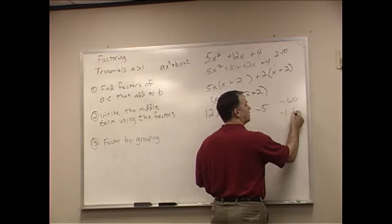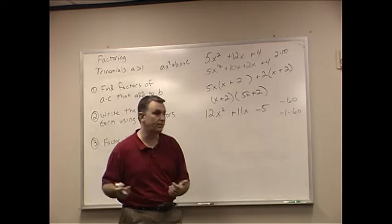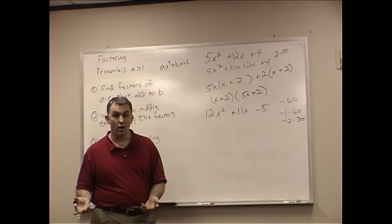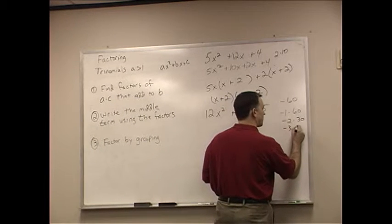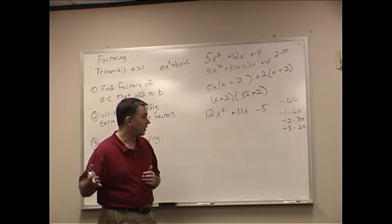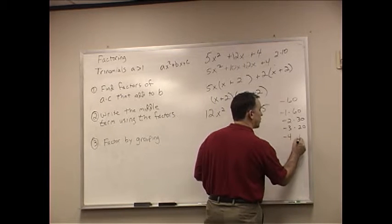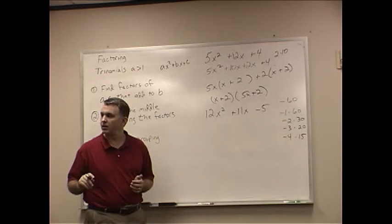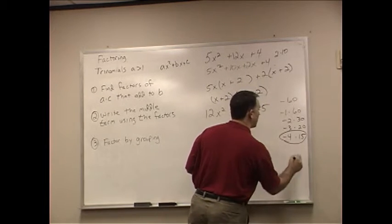Negative 1 times 60. It multiplies to be negative 60. Not even close. It's positive 59. Negative 2 times 30. Not close, but we're getting closer. It's negative 28 when you add those. Negative 3 times 20. Well, that's 17. We're getting closer. 4 goes into 60. Negative 4 times 15. Oh boy, you got the little ding, ding, ding going off inside your head. So, negative 4 and 15.